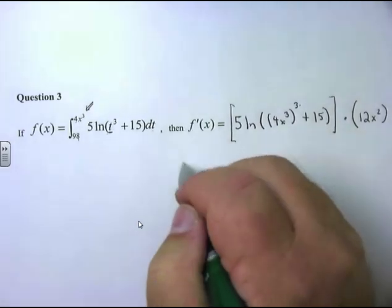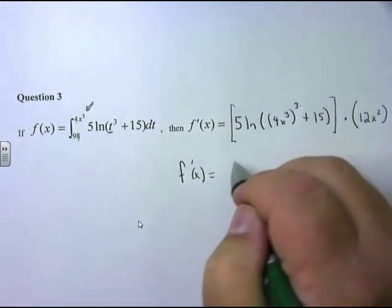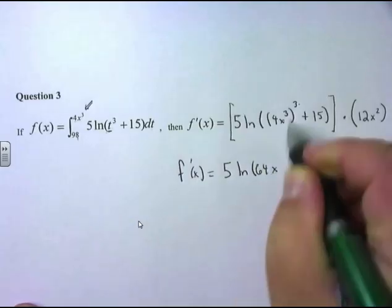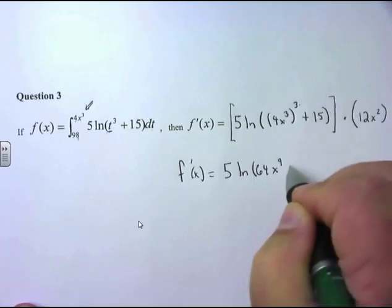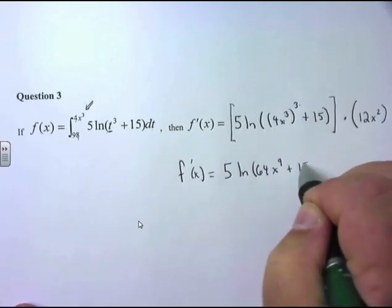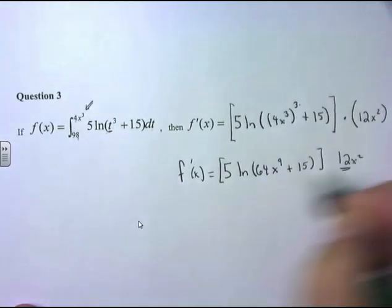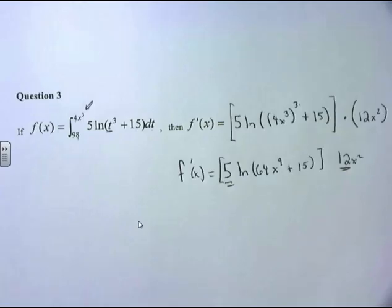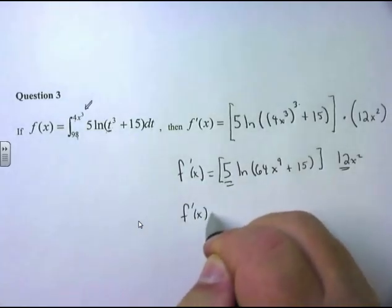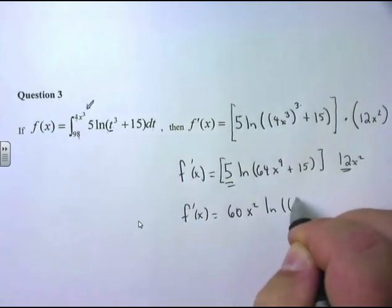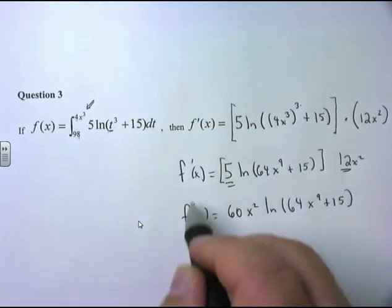Cleaning this up: 4³ = 64 and (x³)³ = x⁹, so we get 5·ln(64x⁹+15) times 12x². Multiplying the coefficients, 12×5 = 60, so the final answer is 60x²·ln(64x⁹+15). On WebWork or tests, the key is showing that you understand the derivative and integral cancel, you plug in the function, and then apply the chain rule by multiplying by the derivative of the inside.